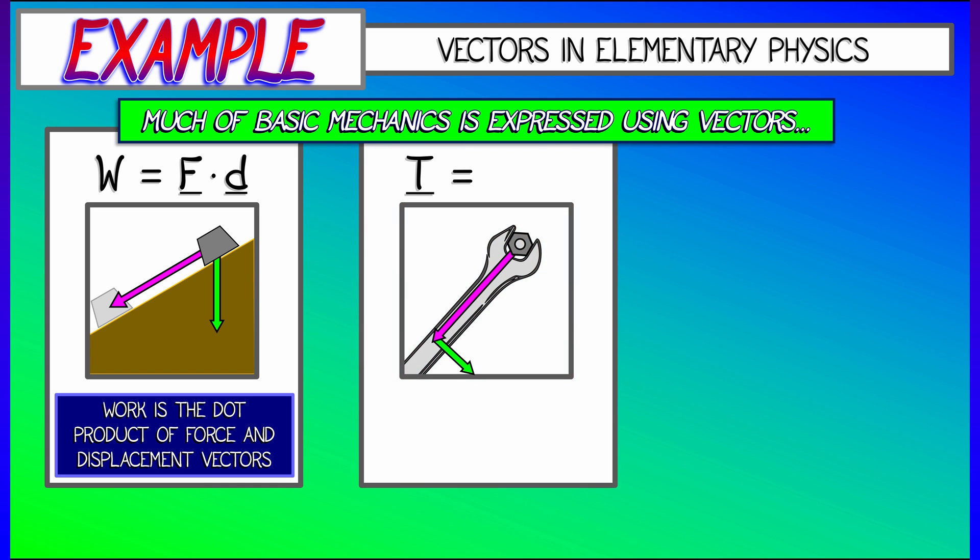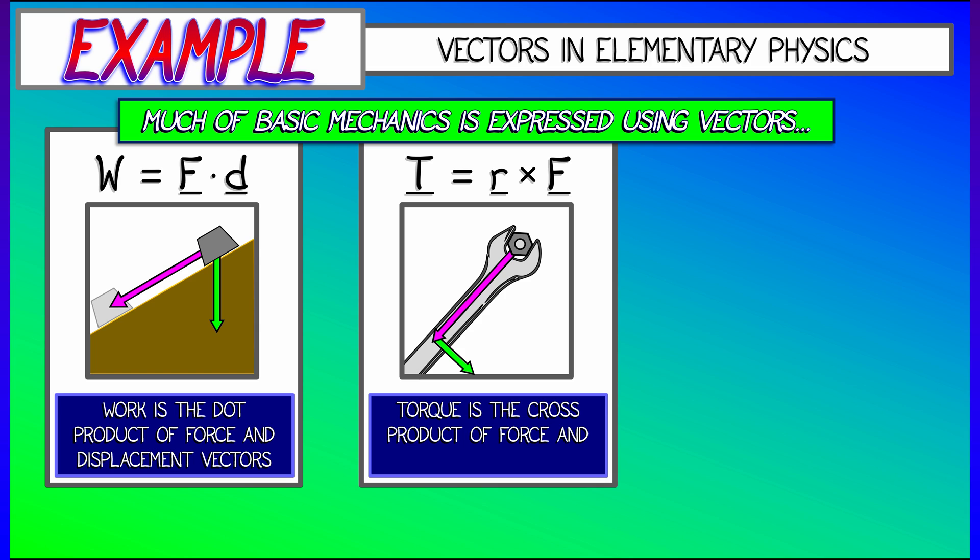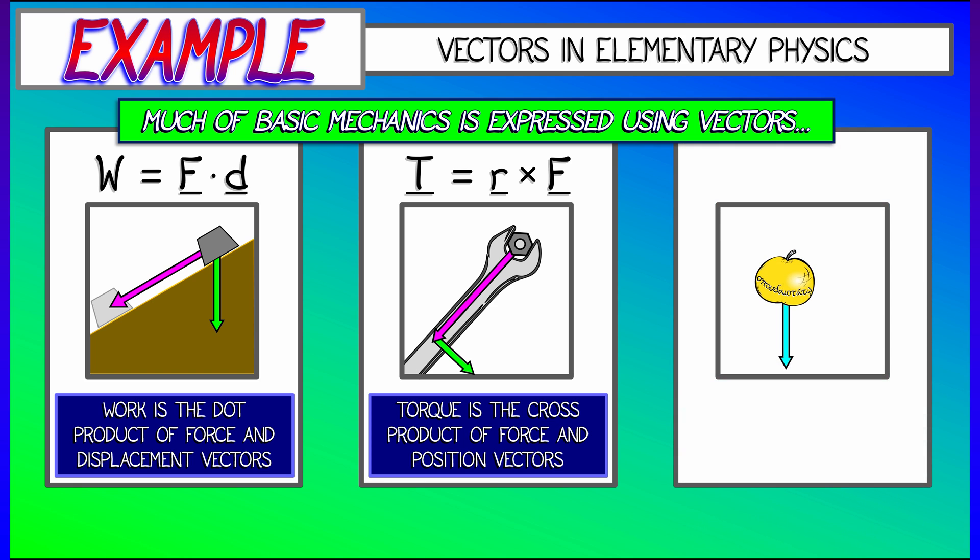That's one example. Another example comes from torque. If you look at force applied at some distance away from an object, then the torque can be expressed as a vector quantity that is really a cross product of those two vectors.